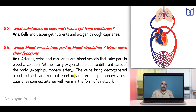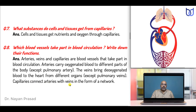What substances do cells and tissues get from capillaries? During circulation, blood transports various materials, so cells and tissues get nutrients and oxygen through capillaries. Which blood vessels take part in blood circulation? Arteries, veins, and capillaries are the blood vessels involved. Arteries carry oxygenated blood to different parts of the body except the pulmonary artery. Veins bring deoxygenated blood to the heart from different organs except pulmonary veins. Capillaries connect arteries with veins in the form of a network.